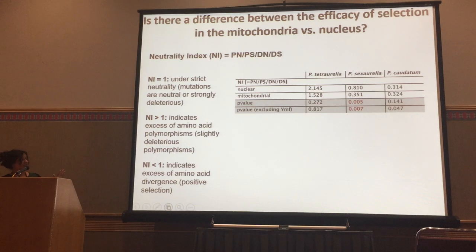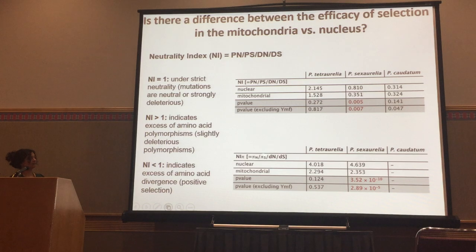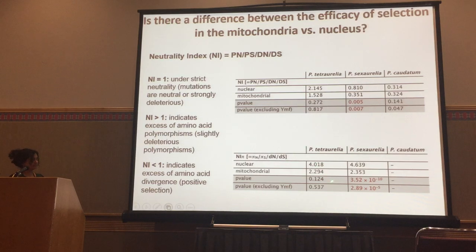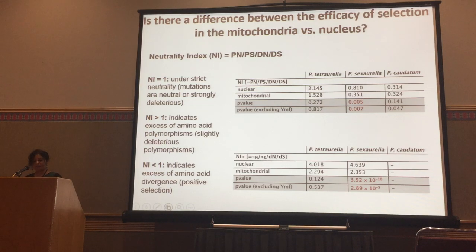To reduce synonymous site saturation biases, we calculated variations of the neutrality index, including one using πN and πS by pairwise dN/dS for more closely related species, done for two of them. Consistently, tetraurelia shows no difference in neutrality index values, but for sexaurelia there is a significant difference — the nucleus has more deleterious polymorphisms — so mitochondria appear to be under stronger purifying selection, even without recombination.